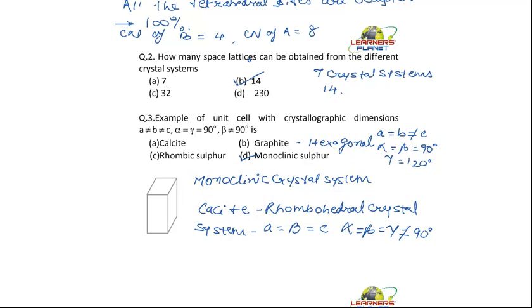Rhombic sulfur will belong to rhombohedral. So these are the crystal systems. One is more cubic. What are the dimensions in cubic?